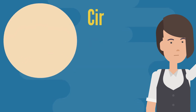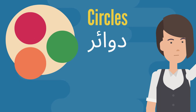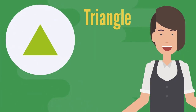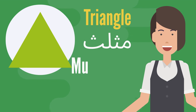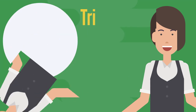Circle — دائرة. Circles — دوائر. Triangle — مثلث. Triangles — مثلثات.